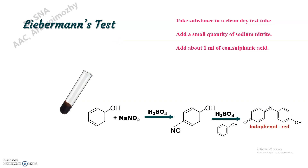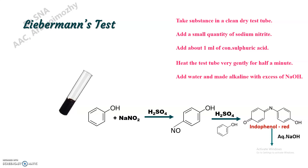After adding concentrated sulfuric acid, we can heat it for half a minute. After heating, we will be getting the endophenol dye, which is actually red in color in acidic medium due to its uncharged form. Now to this we can add some water and sodium hydroxide.